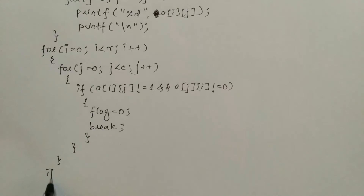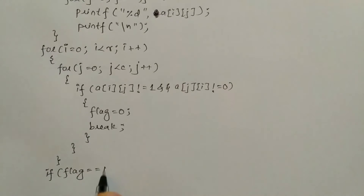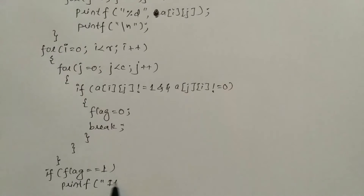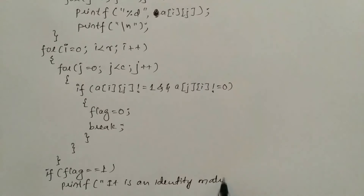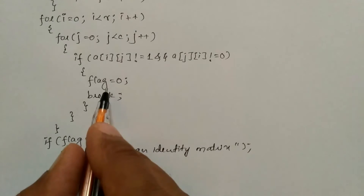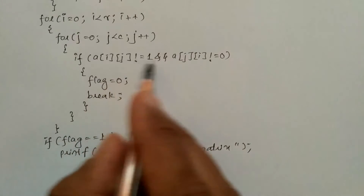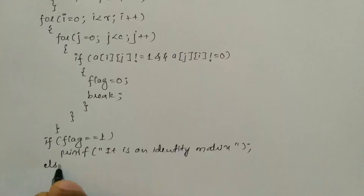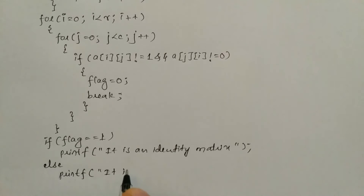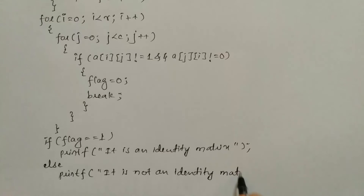Now we are going to check: if flag is equal to one, then it has to print using printf 'it is an identity matrix', end the double quotation mark and put semicolon. If this flag is false, that is if it is set to zero when the condition is true, then we have to write the else part. Here we'll write a printf statement: 'it is not an identity matrix', end the double quotation mark and put semicolon.